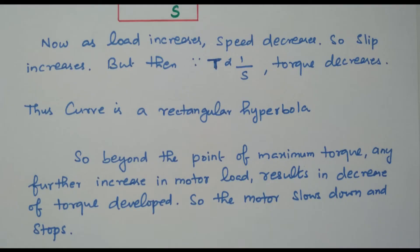So in this video, we discussed the torque slip characteristics of an induction motor with two regions: low slip region and high slip region. During the low slip region, torque and slip are directly proportional. During the high slip region, they are inversely proportional. We conclude that beyond the maximum torque, while increasing the load, the speed decreases and the motor stops. Subscribe to the channel for more videos and notifications. Soft copy of this material is available in the drive link given in the description box. Thank you for listening.